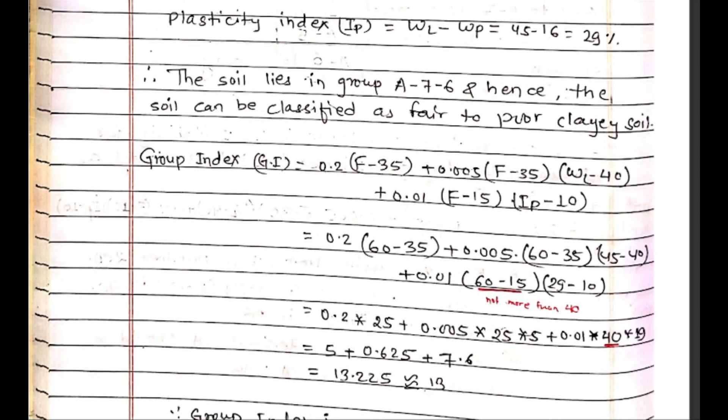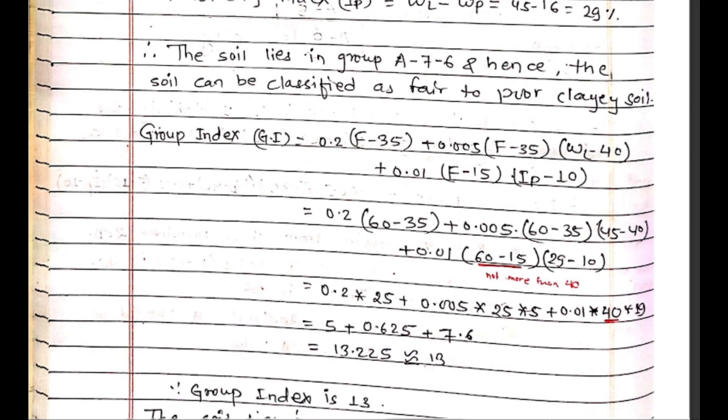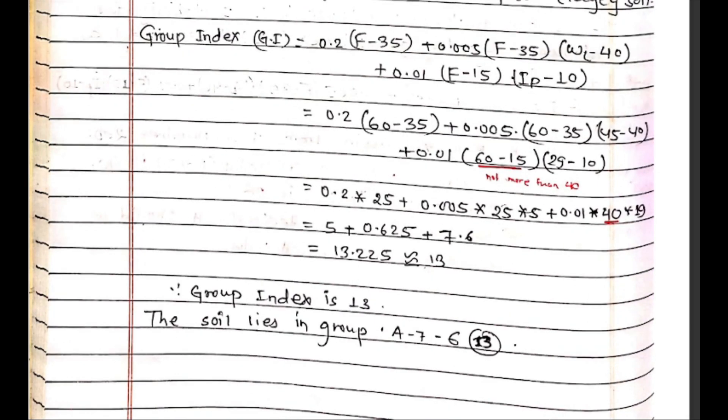Calculating the group index: 0.2(F-35)... So 0.2 times (60-35)... which gives 0.2 times 25 plus 0.005 times 25 times 5 plus 0.01 times...